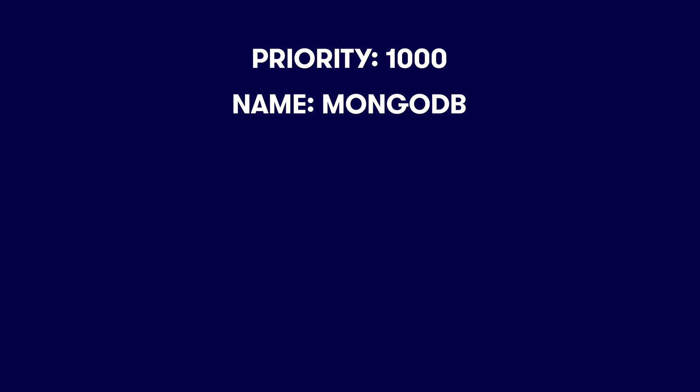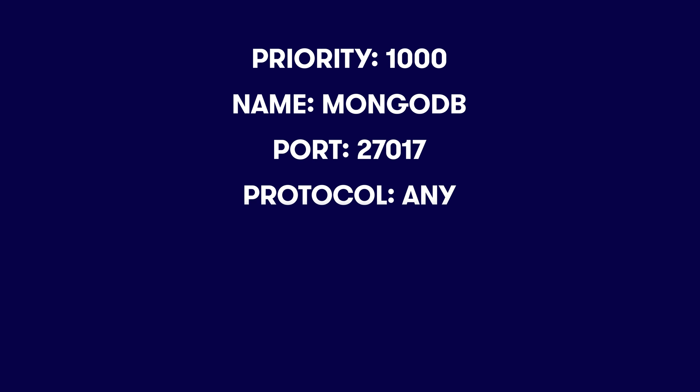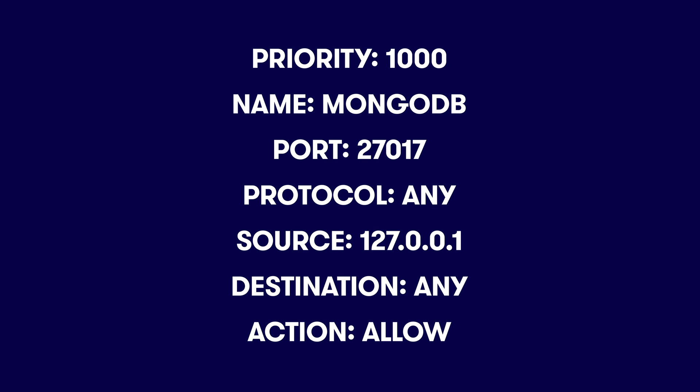Let me give you an example of a rule. Priority 1000. Name: MongoDB. Port 27017. Protocol: Any. Source: 127.0.0.1. Destination: Any. And Action: Allow. Now this rule is most likely attached to a VM that runs MongoDB. It specifies which port is allowed to be used — 27017 — and that only IP 127.0.0.1 can access that port. If traffic matches this rule, it is triggered and the NSG processing stops.